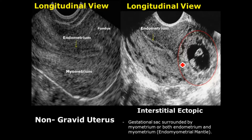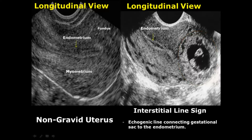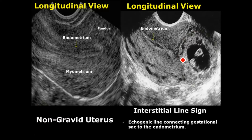The next type is the interstitial ectopic pregnancy, which occurs in the upper uterine horns. The gestational sac is away from the endometrium and is surrounded by myometrium and endometrium — this is called the endomyometrial mantle. One feature of interstitial ectopic is the interstitial line sign: an echogenic line connecting the gestational sac to the endometrium.